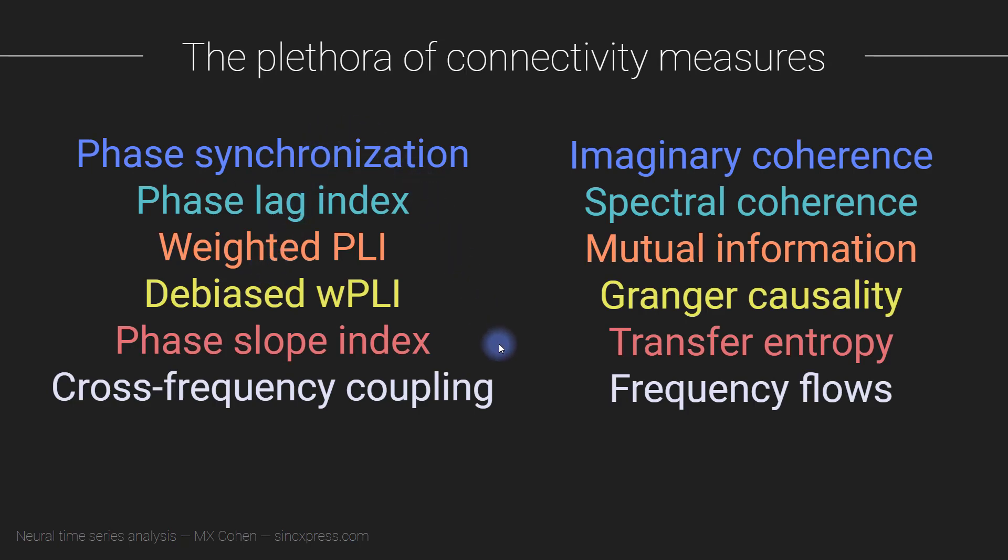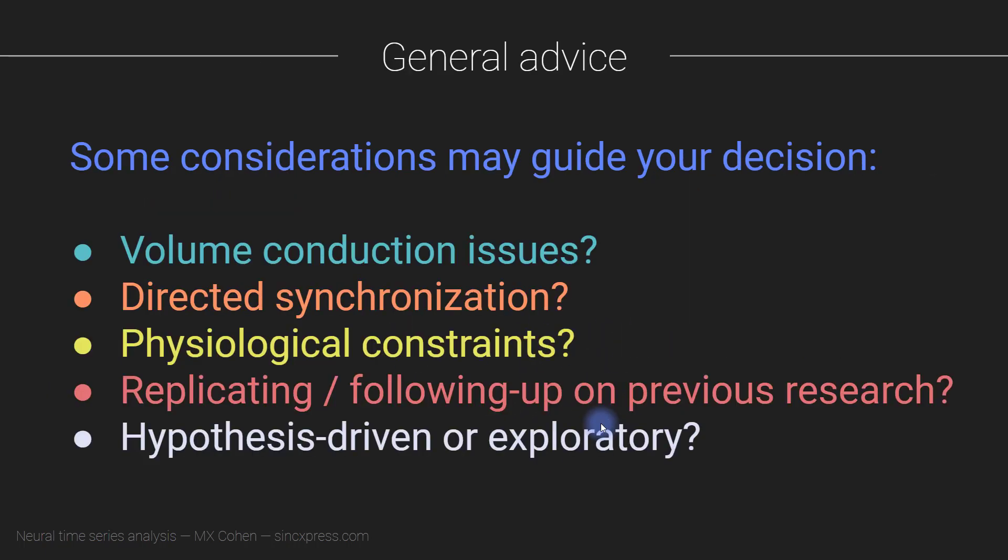This is a totally non-exhaustive list of various connectivity measures that are used in the literature. Some of these I focused on more in this section. A few others I've mentioned and taught about, but there's lots of other methods that I haven't really discussed, and many other methods that aren't even listed on this slide. So what do you do? How do you know which analysis methods you should use? Here I'm going to give you some general considerations that will help you make your decision. I can't make this decision for you.